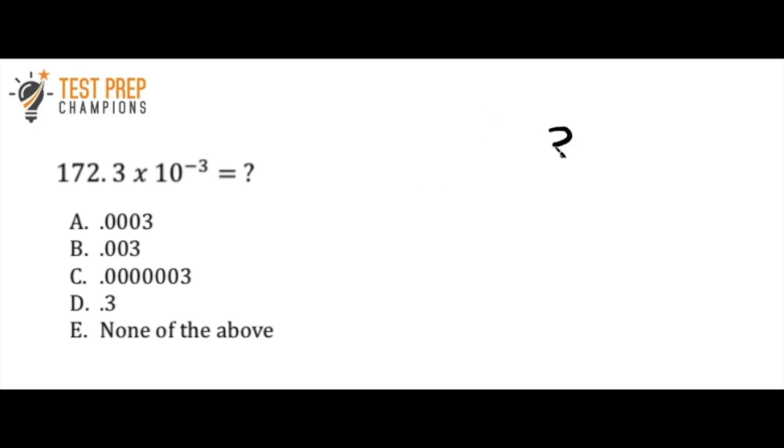Okay, so one way to look at this question is to realize that we have 10 to the negative 3. So since it's 10 to the negative 3, I'm going to come to my 3 and I'm going to move my decimal three points to the left. So that would be 1, 2, 3. So this is where my decimal would go. And I would just fill in my zeros, and that would tell me that B is the correct answer.